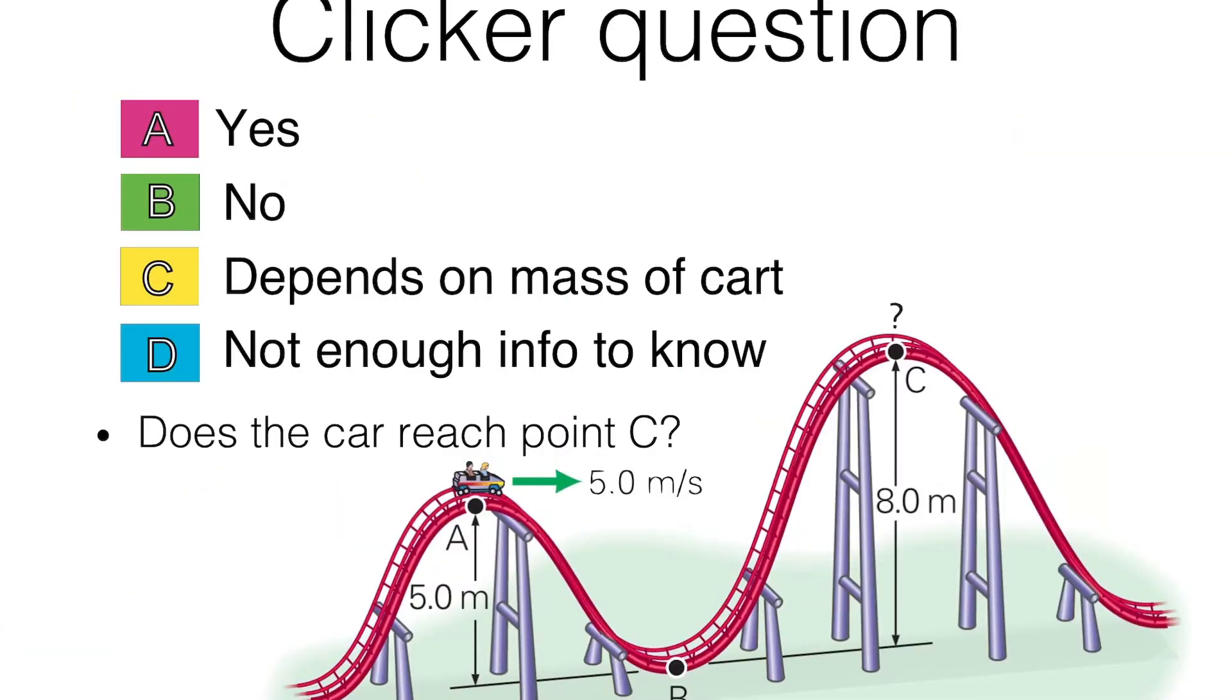Now the next question is: does the car reach point C? For the car to make it to point C, the energy at A, the total energy at A, should be equal to energy at C. If it has that much amount of energy and a frictionless surface, it would make it to point C. But we don't know that, so energy at A has to equal energy at B equals energy at C. We know for sure that energy at A equals energy at B.